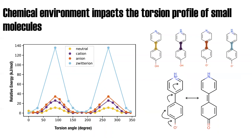There are several problems here. Number one is that most cheminformatics toolkits will consider this a single bond, not a double bond. Another issue is whether a torsion scan of biphenyl without the oxygen can be used for the case with oxygen — probably not. And a deeper question about chemical perception is whether you can use the same torsion parameters for the neutral form and the zwitterion form. The motivating question is: can we predict when a bond will be conjugated?